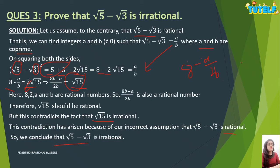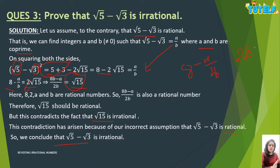The next type is where you get a product in the question. For example, prove that 2 root 5 is irrational. The starting is the same — write it as A upon B. Then take 2 to the other side to get A upon 2B. Since A, B, and 2 are rational numbers, this would make root 5 a rational number, but root 5 is irrational. So the concept remains the same, and likewise you can solve all such questions. You can visit our website for more practice questions.